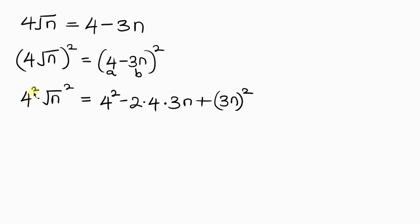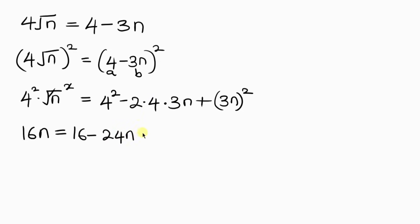Now 4 squared is 16, and the square cancels the square root, leaving behind n. So 16n equals 4 squared (which is 16), minus 2 times 4 times 3n (that is 24n), plus 3 squared (which is 9) times n squared.